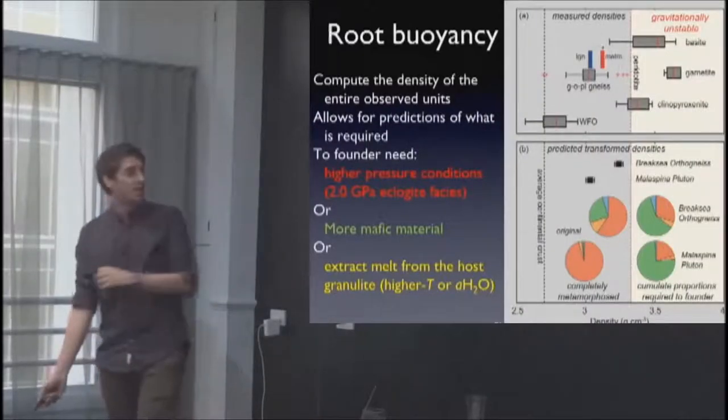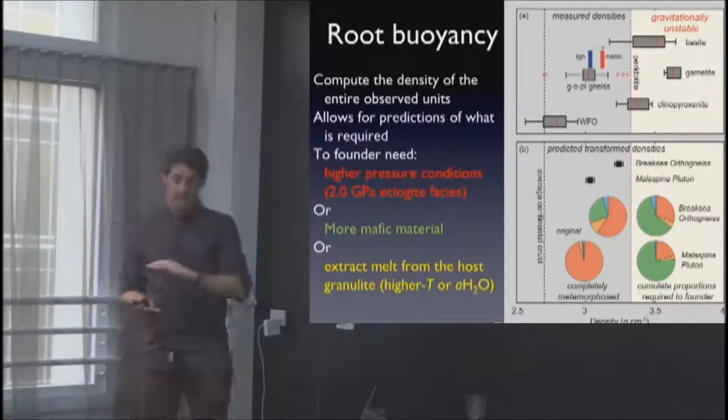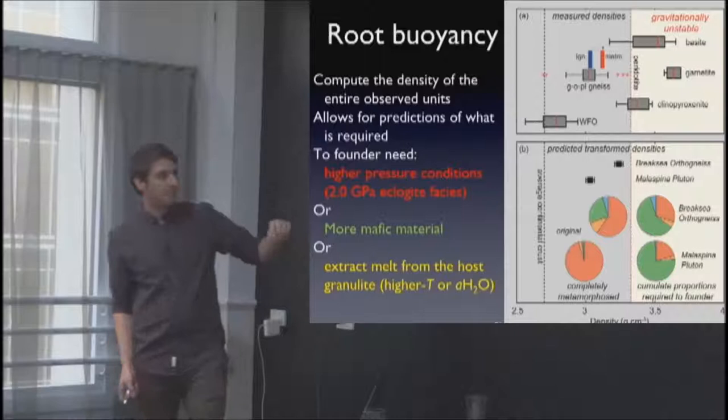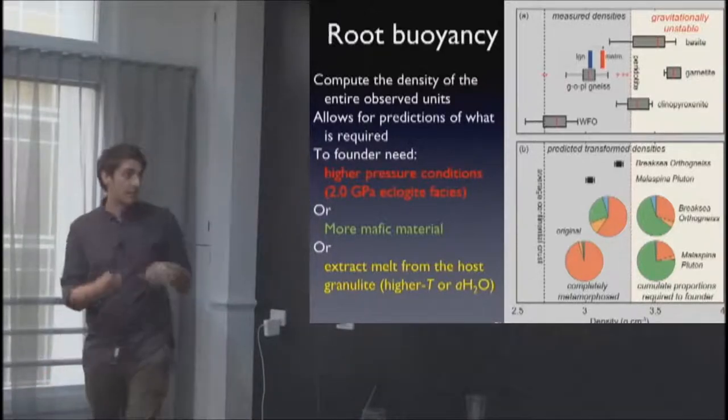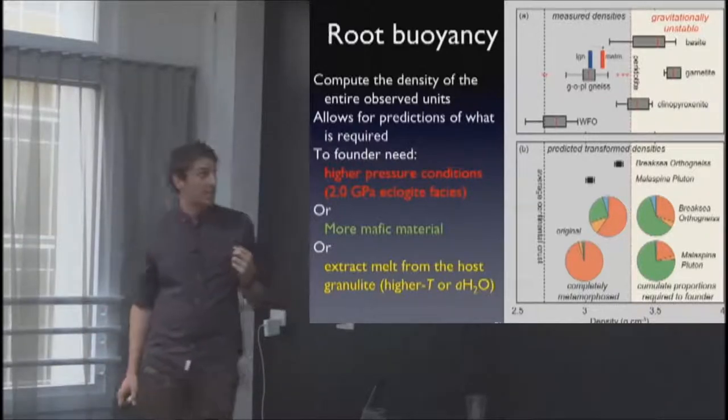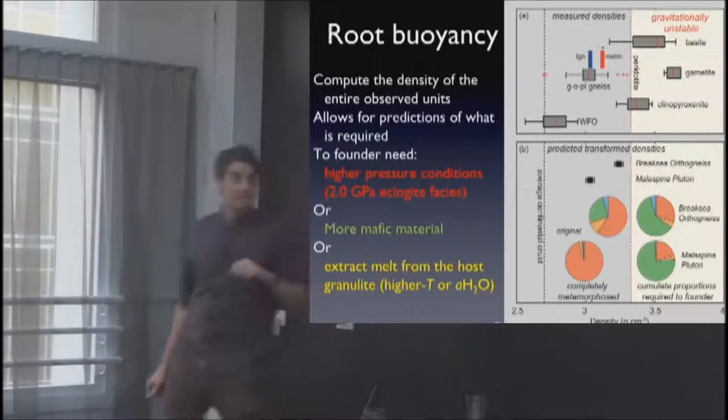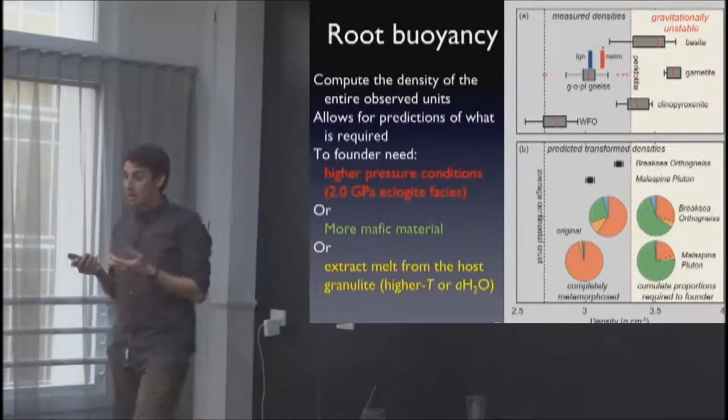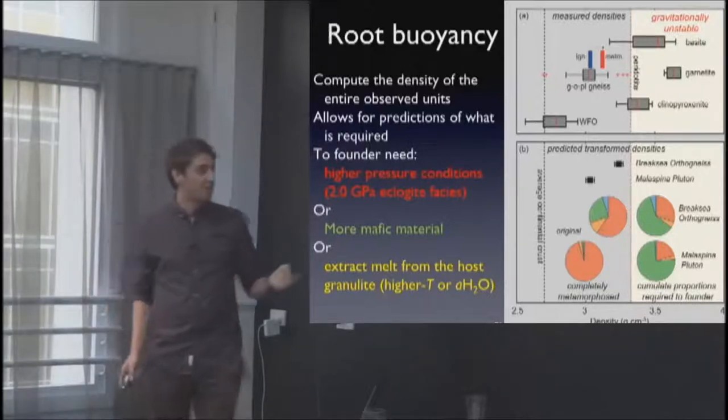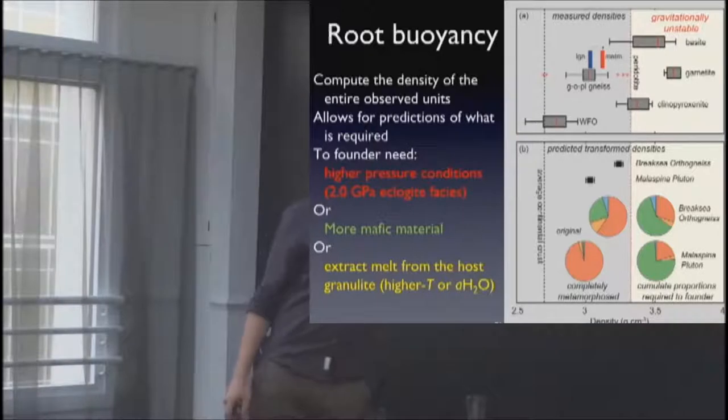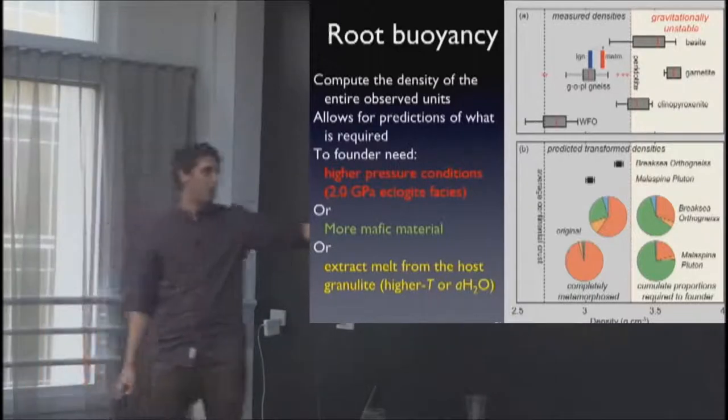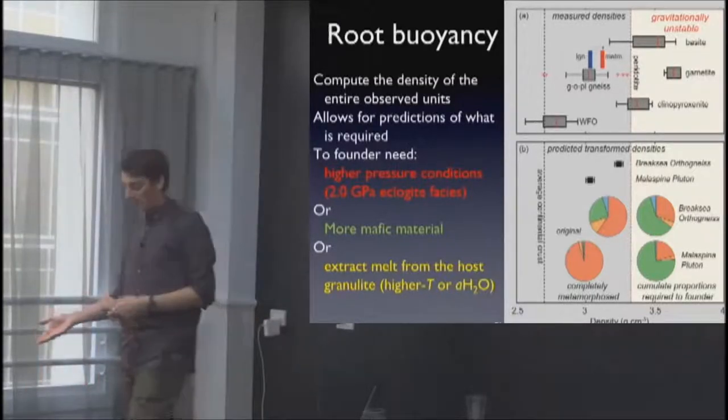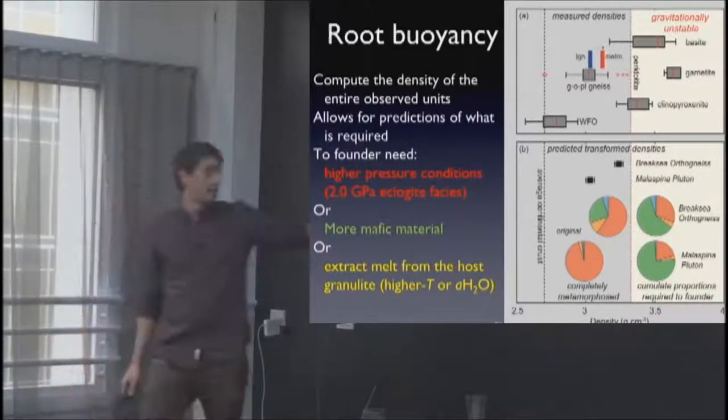If we do some calculations of the unit density of the systems that we see, the Break Sea is sitting at about 3.25. This dotted line would represent the mantle density of 3.33 grams per cubic centimetre. The Malaspina is at much lower densities. We either need to have higher pressures or more mafic material which is fairly self-obvious. We can actually calculate how much we need to lead to it falling back into the mantle. Another alternative is we induce high proportions of melting of this material which could create more mafic residue.